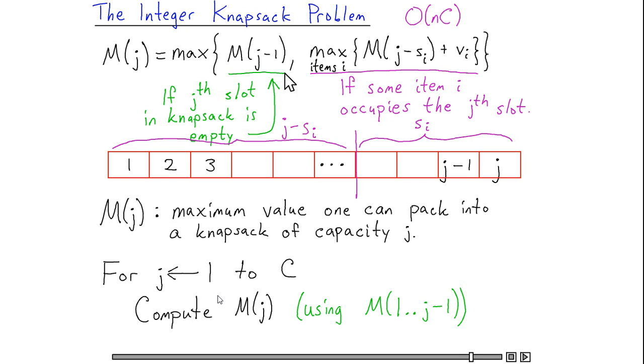That is, if this M(j-1) term was the maximum, then I want to store a back pointer to j minus 1. Otherwise, I want to store a back pointer to j minus si for whatever item it was that was the maximizing item for that particular subproblem. By tracing back the back pointers, starting at position C, I can actually then reconstruct all of the items that went into the optimal solution. And this is described more in the textbook.